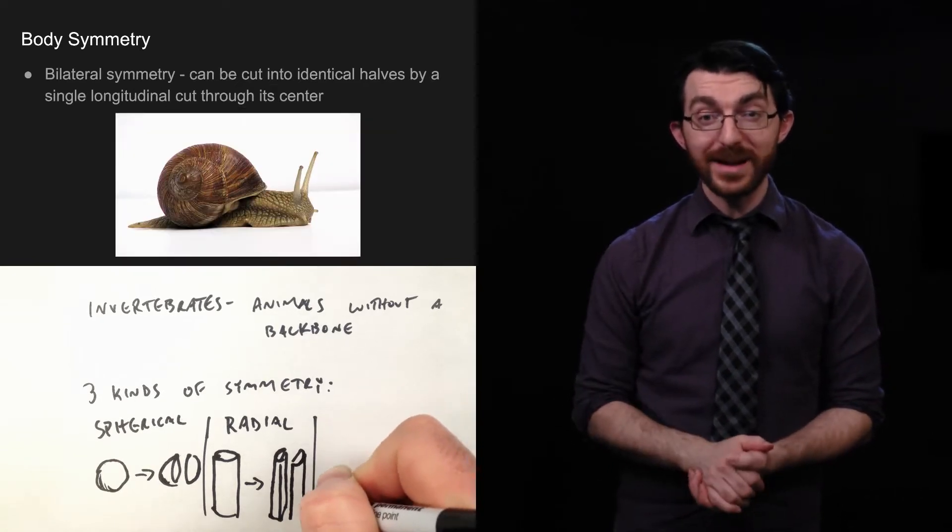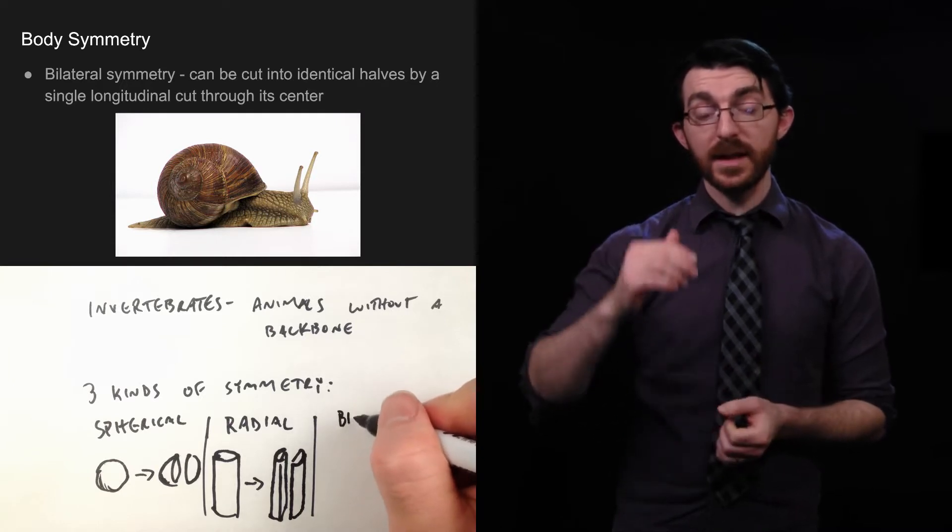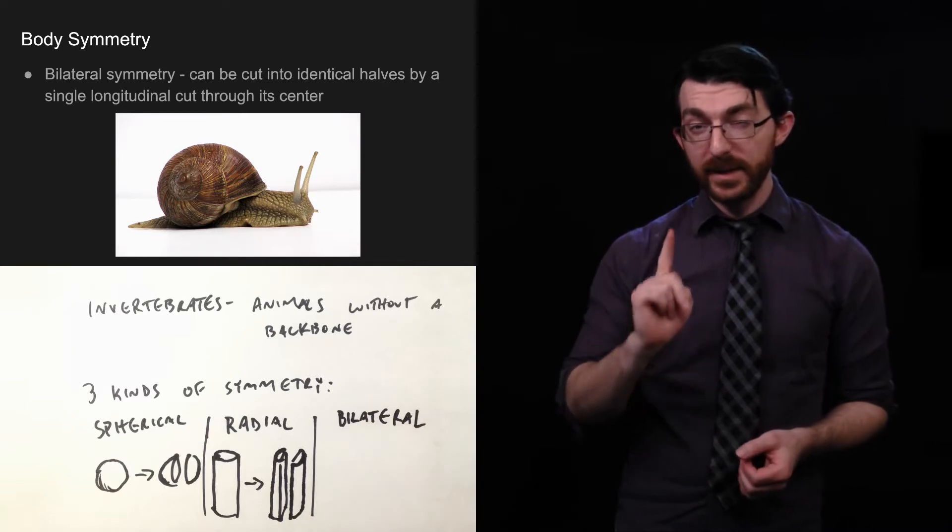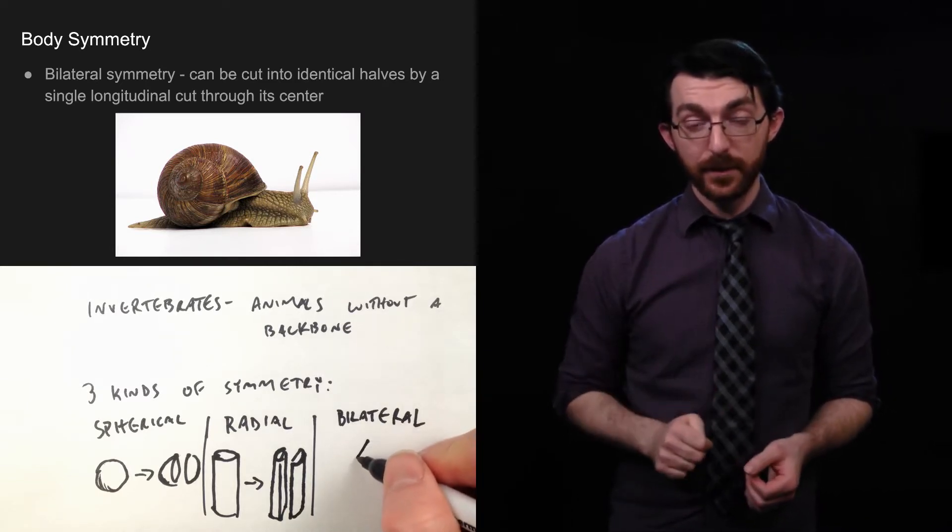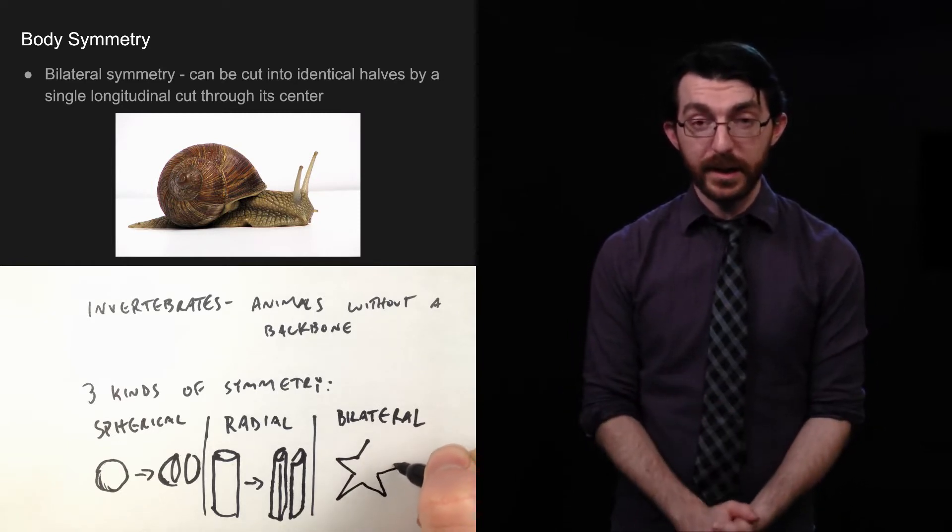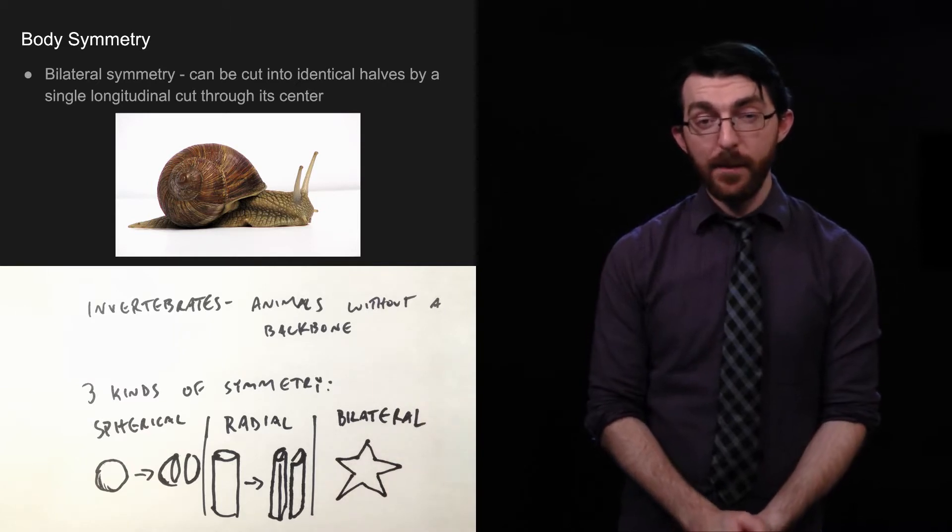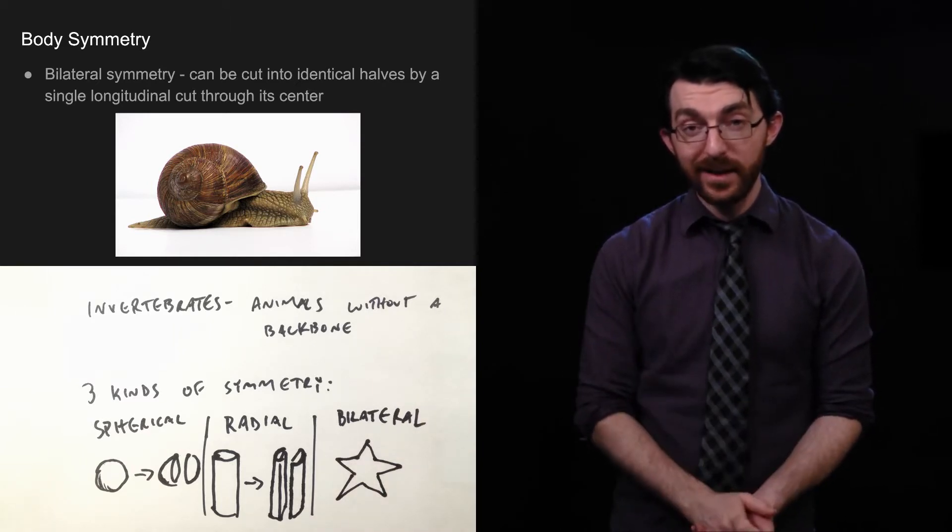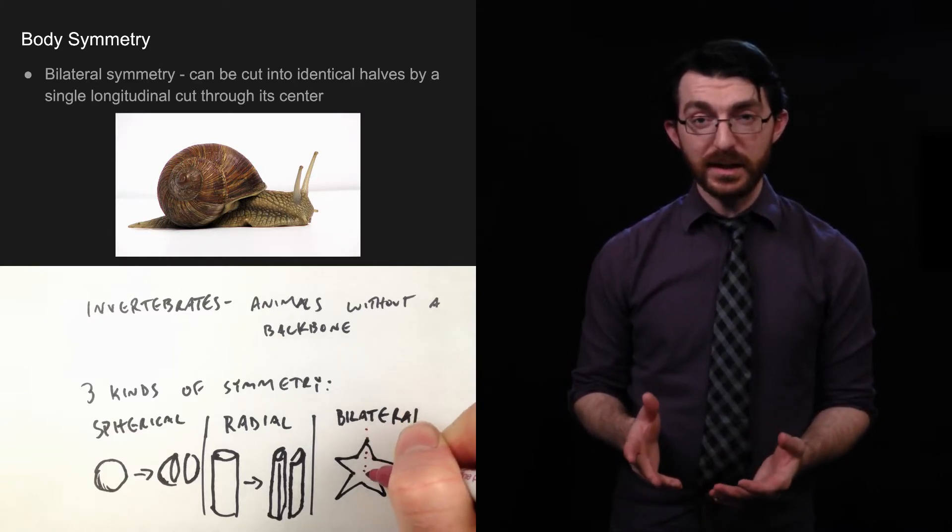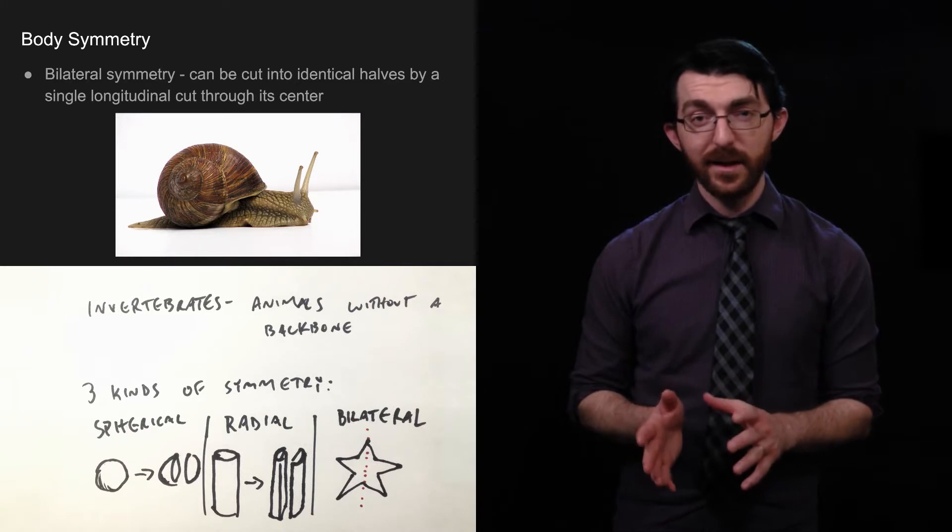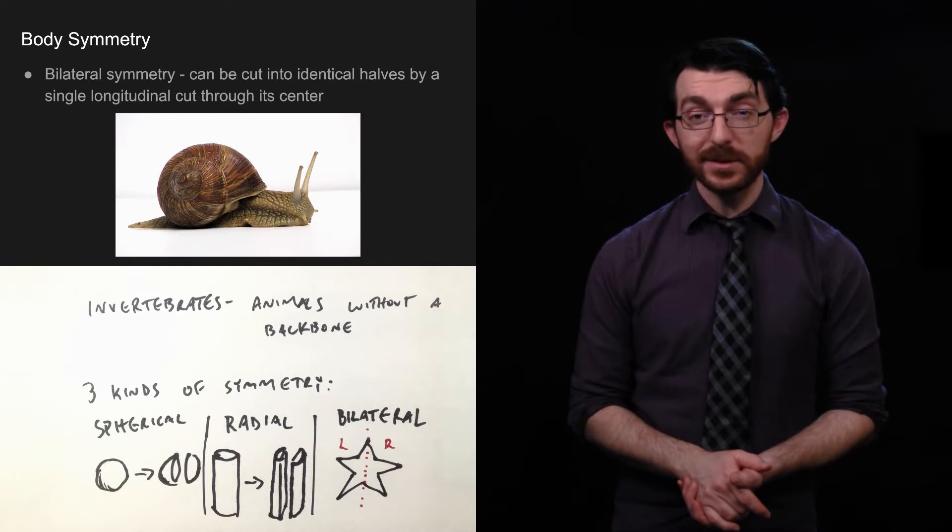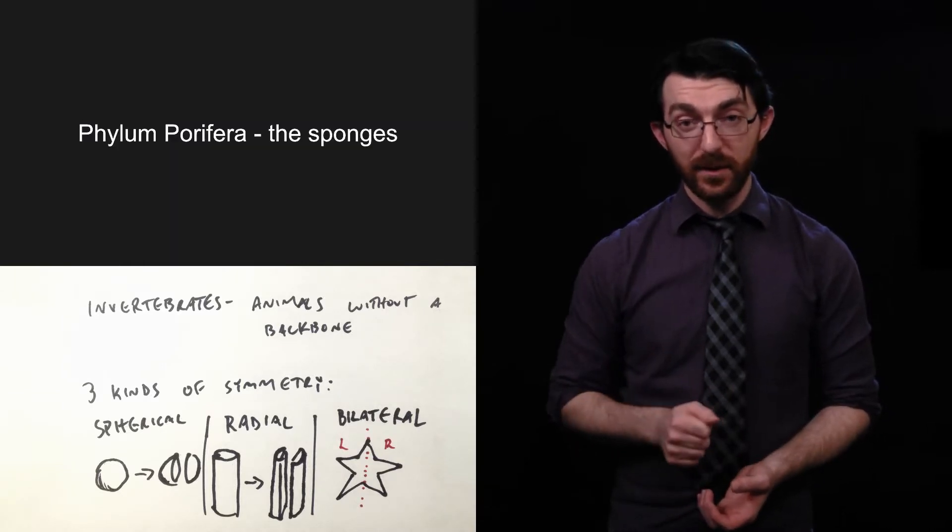The last kind of symmetry is called bilateral symmetry. This is the kind of symmetry that we have. This is where you can be cut into two identical halves by a single longitudinal cut through its center. So if you have a left and a right half, you have bilateral symmetry. Tubes don't have a left and a right half because you can rotate it any way you like, and it's still the same shape. And spherical symmetry doesn't have a left or right half because every half is equal no matter how you cut it.